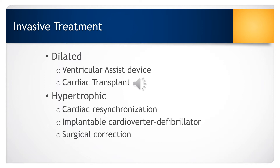For hypertrophic cardiomyopathy, patients may need cardiac resynchronization if they are experiencing atrial dysrhythmias. They may also have an implanted cardioverter-defibrillator if they are at high risk for sudden cardiac death. Surgical correction may also occur, involving an incision of the hypertrophied septal muscle and resection of some of the hypertrophied ventricular muscle. Most patients have an improvement in symptoms and exercise tolerance after surgery.